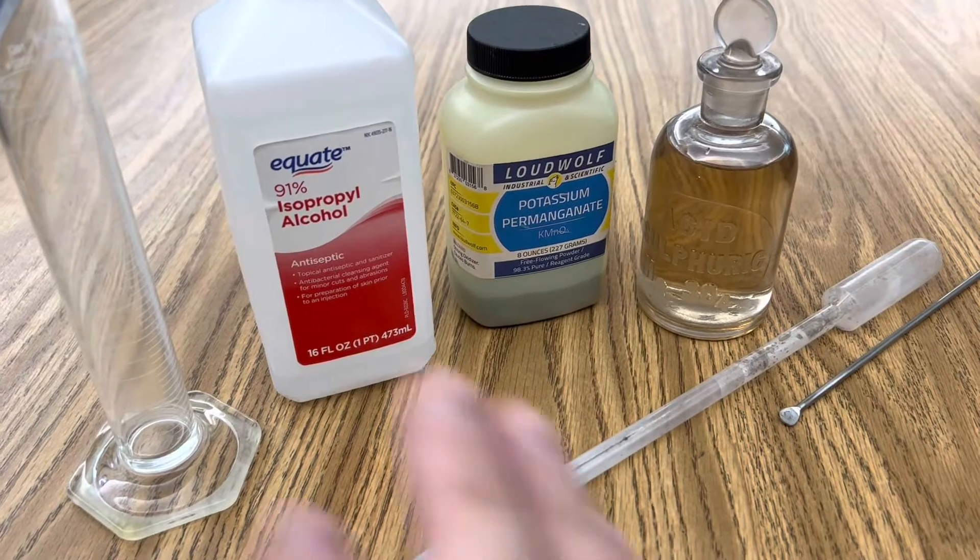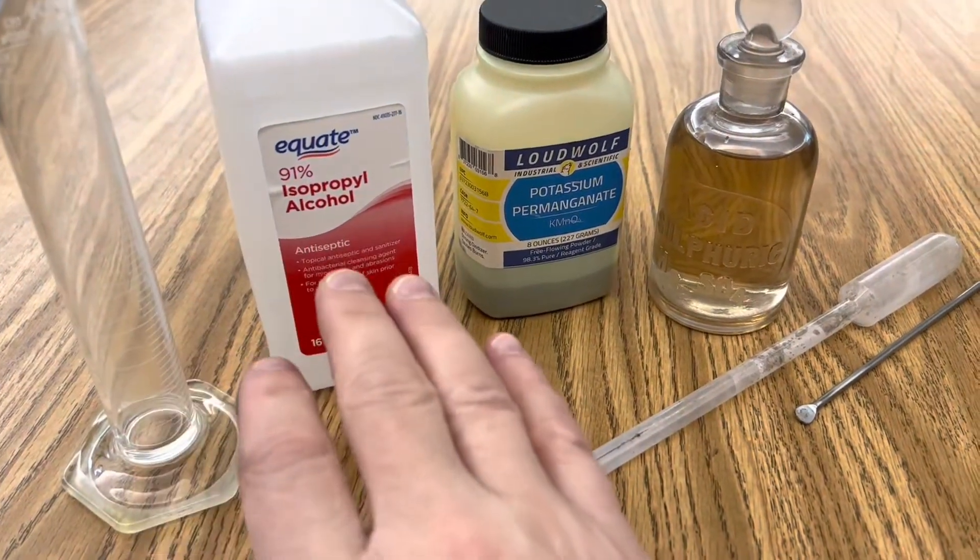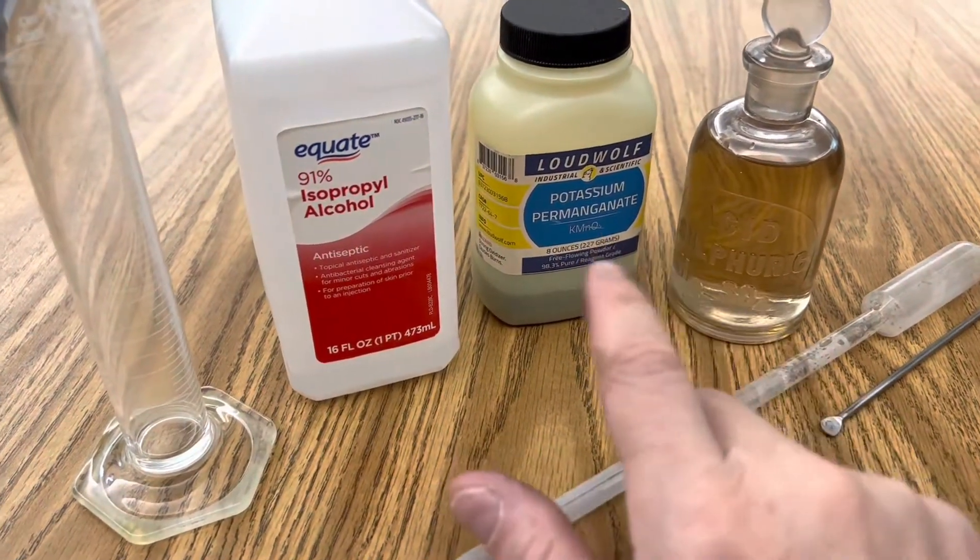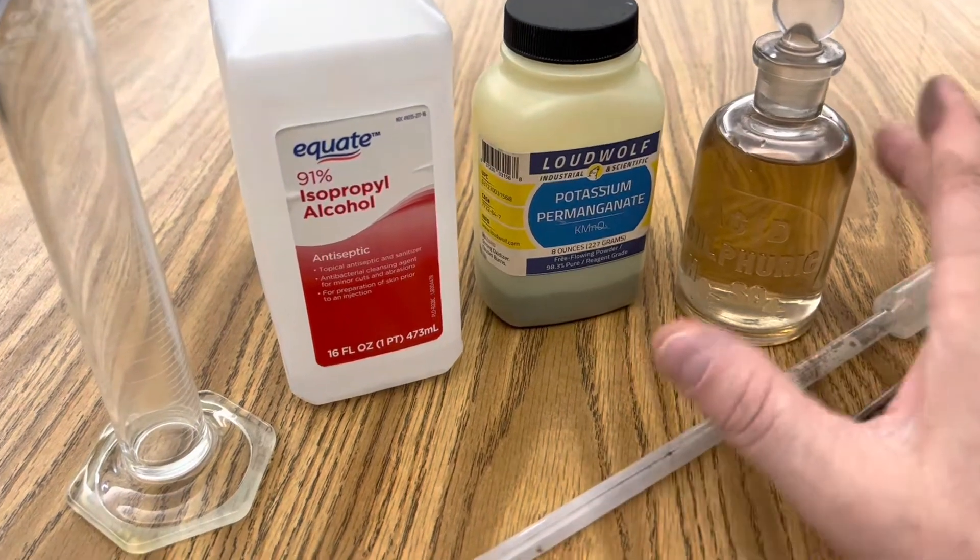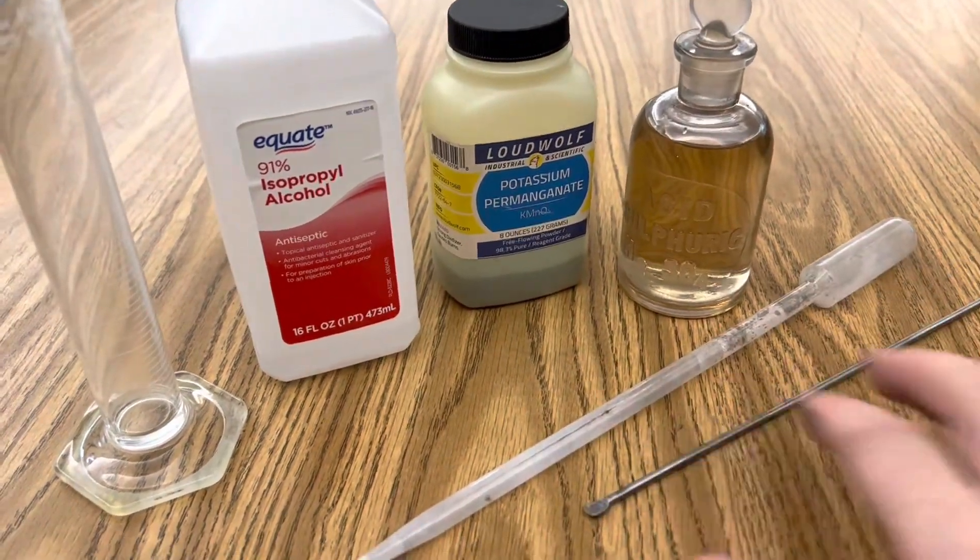All I'm using in this demonstration is a graduated cylinder, 91% isopropyl alcohol, potassium permanganate, 18 molar sulfuric acid, a dropper, and a spoon.